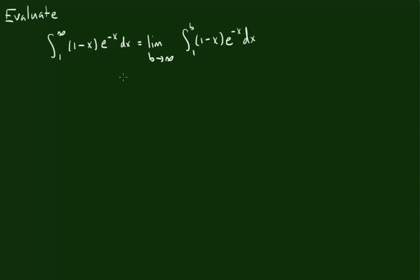So let's go ahead and give it a shot. We'll write the limit as b approaches infinity and figure out what this integral is going to be. We're going to have to resort to integration by parts. We have to choose a derivative part and an antiderivative part. The derivative part is going to be 1 minus x, and the antiderivative part is going to be e to the negative x.